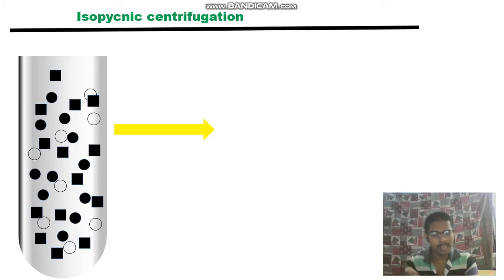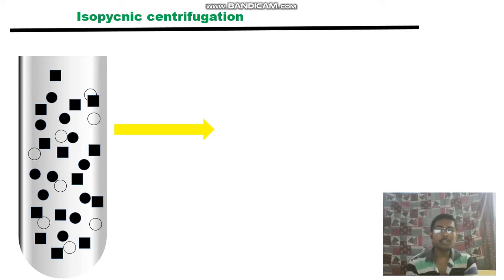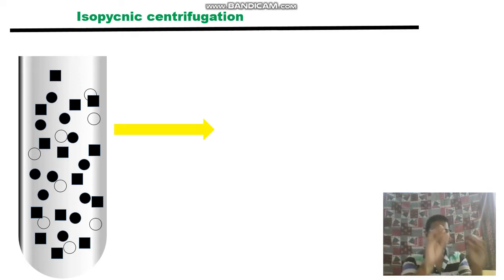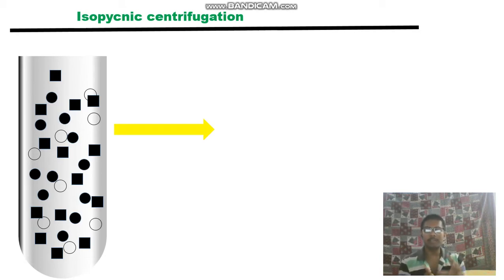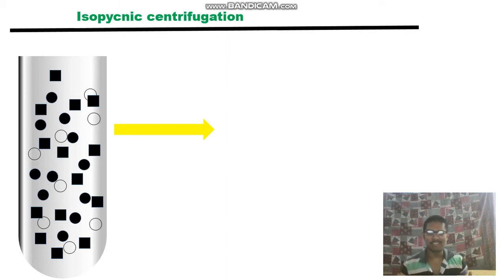That's why it's called density gradient centrifugation. In isopycnic centrifugation, as you can see in the picture, you have a mixture of different particles — lower density particles and higher density particles. Isopycnic centrifugation solely depends upon the density. One basic difference between isopycnic centrifugation and rate-zonal centrifugation is the mechanism of separation.